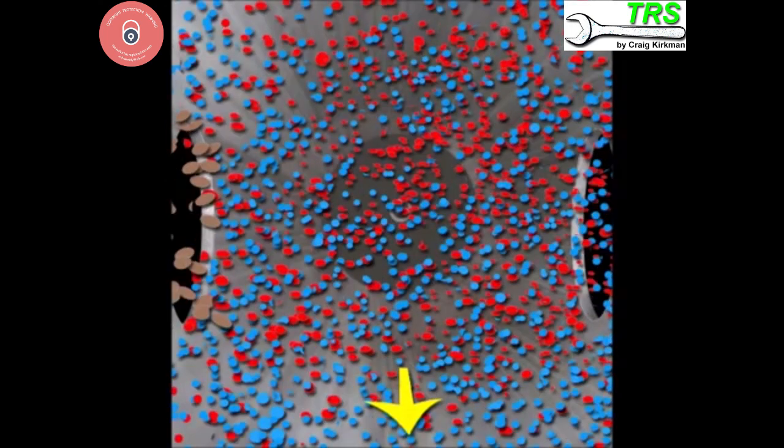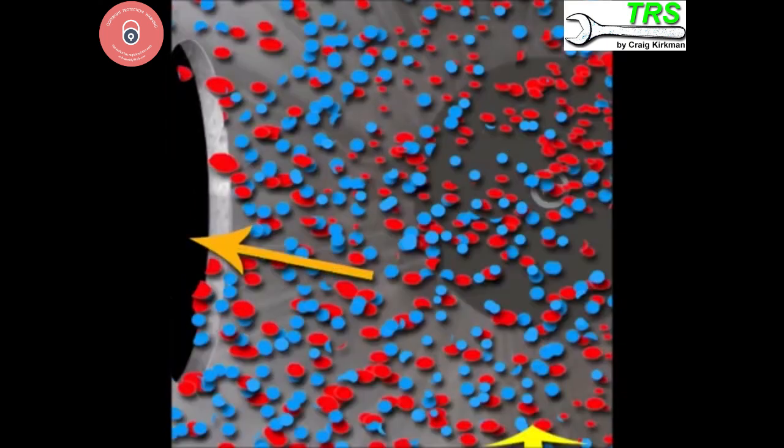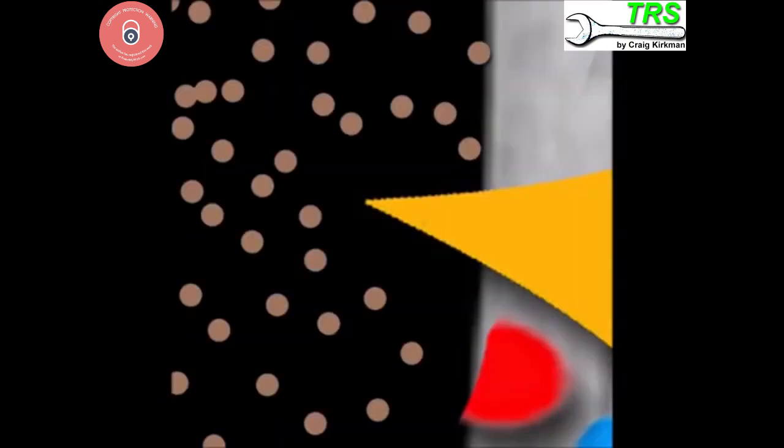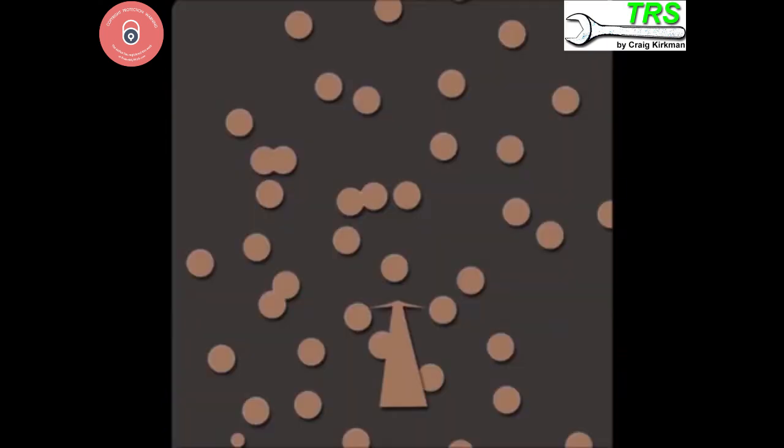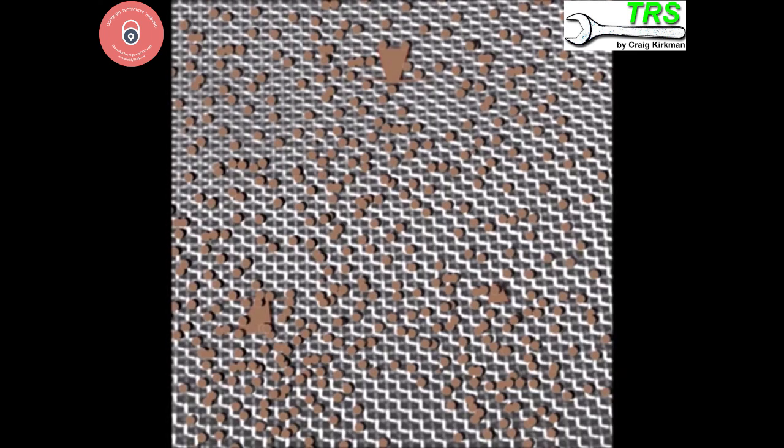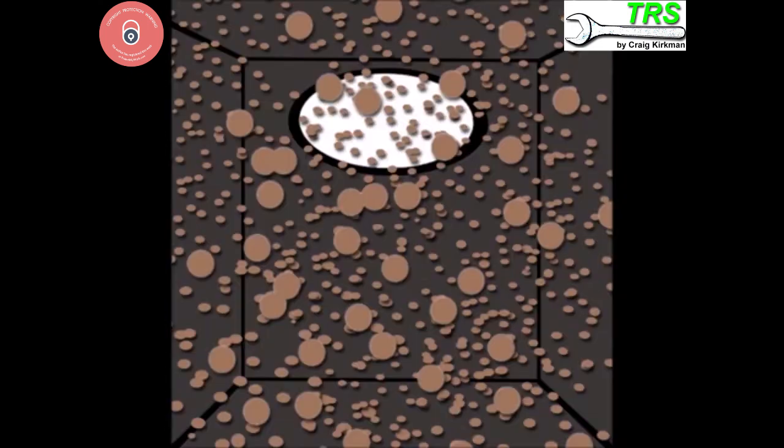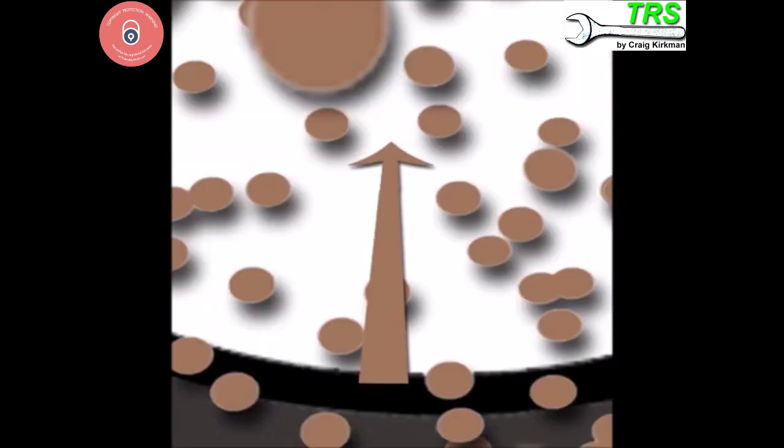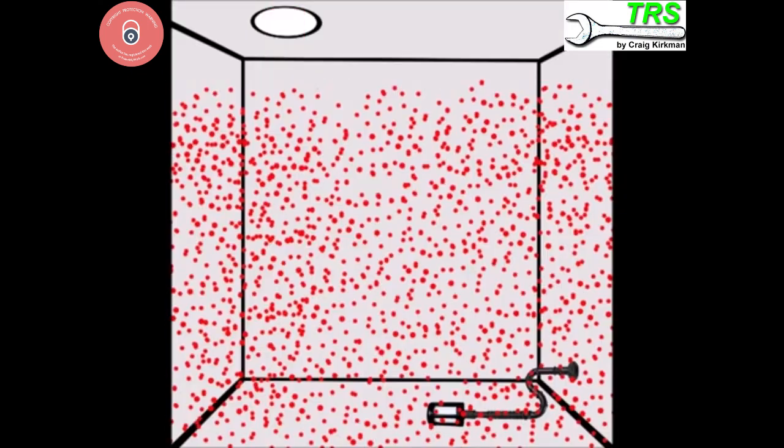Now inside the exhaust muffler we head on through the fine meshing of the spark arrestor. Too much coke and soot on the surface of this arrestor and it can cause problems such as bog down. But we travel right through into the final stages of the muffler and finally out of the engine. Now let's watch the animation run right through.